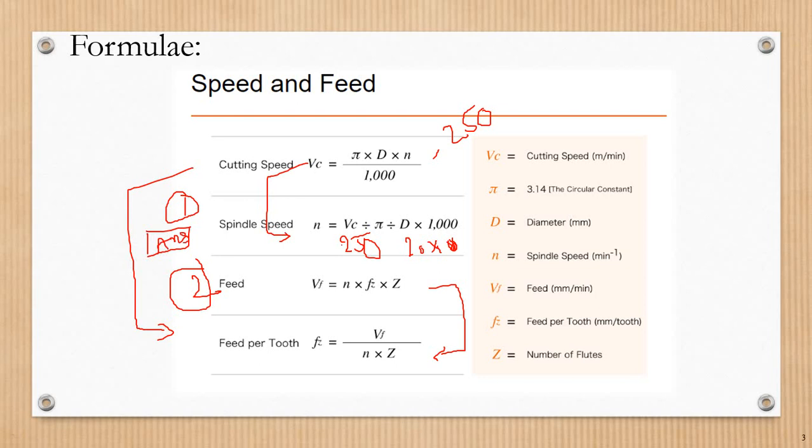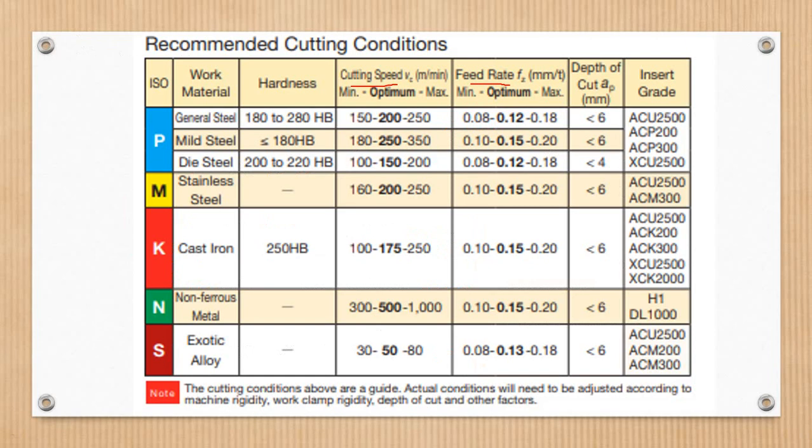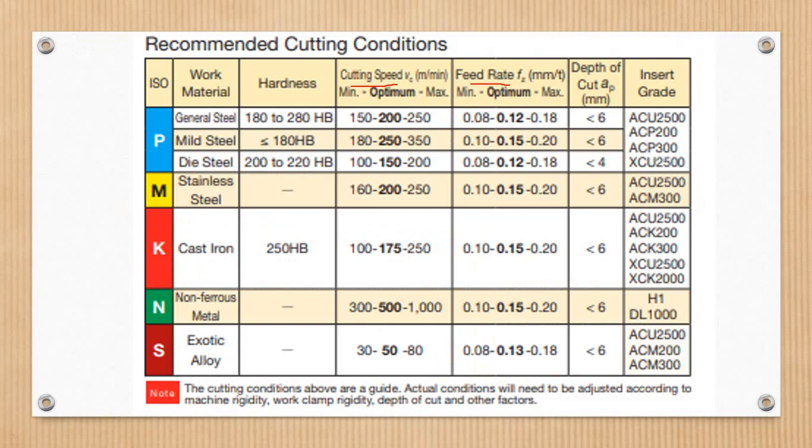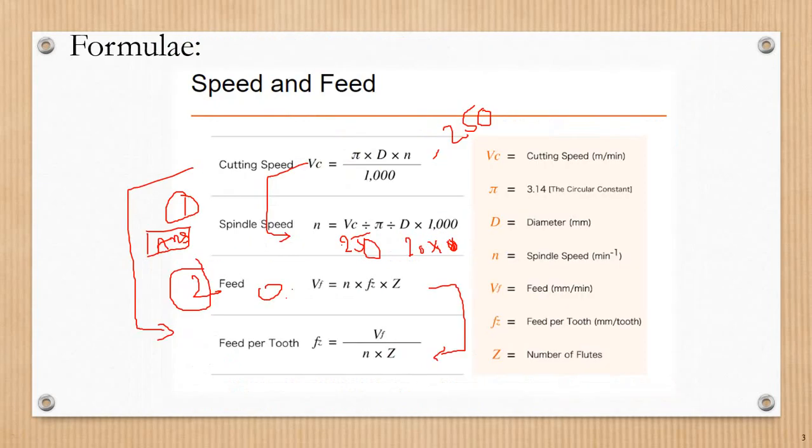Next, feed per tooth. Here we have a value from the catalog. The feed rate ranges from 0.08 to 0.18. We'll use 0.15 for this example. This is the feed rate value.